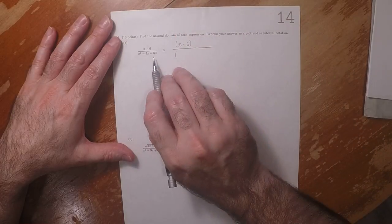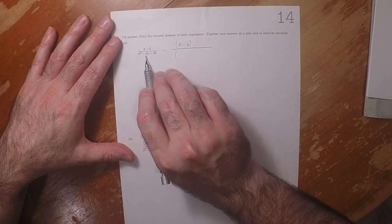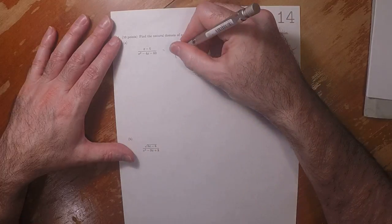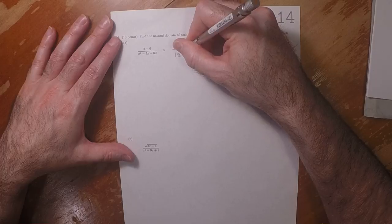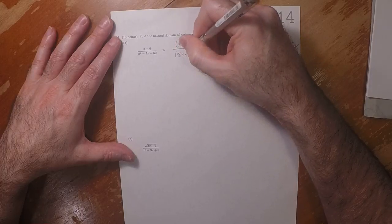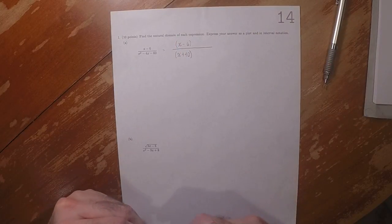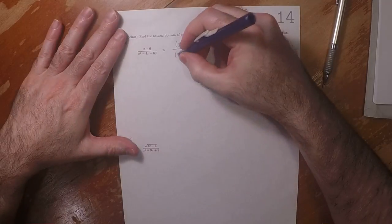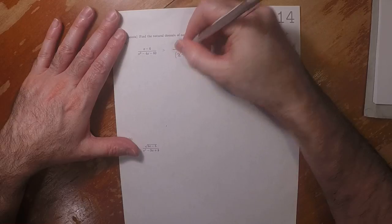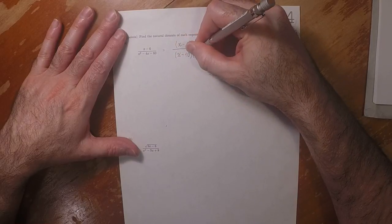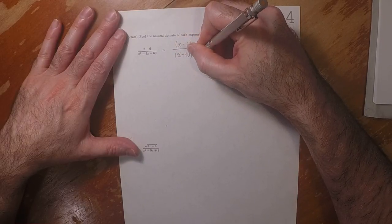Two numbers whose product is negative 60 and whose sum is negative 4, so x minus 10 multiplied by x plus 6.